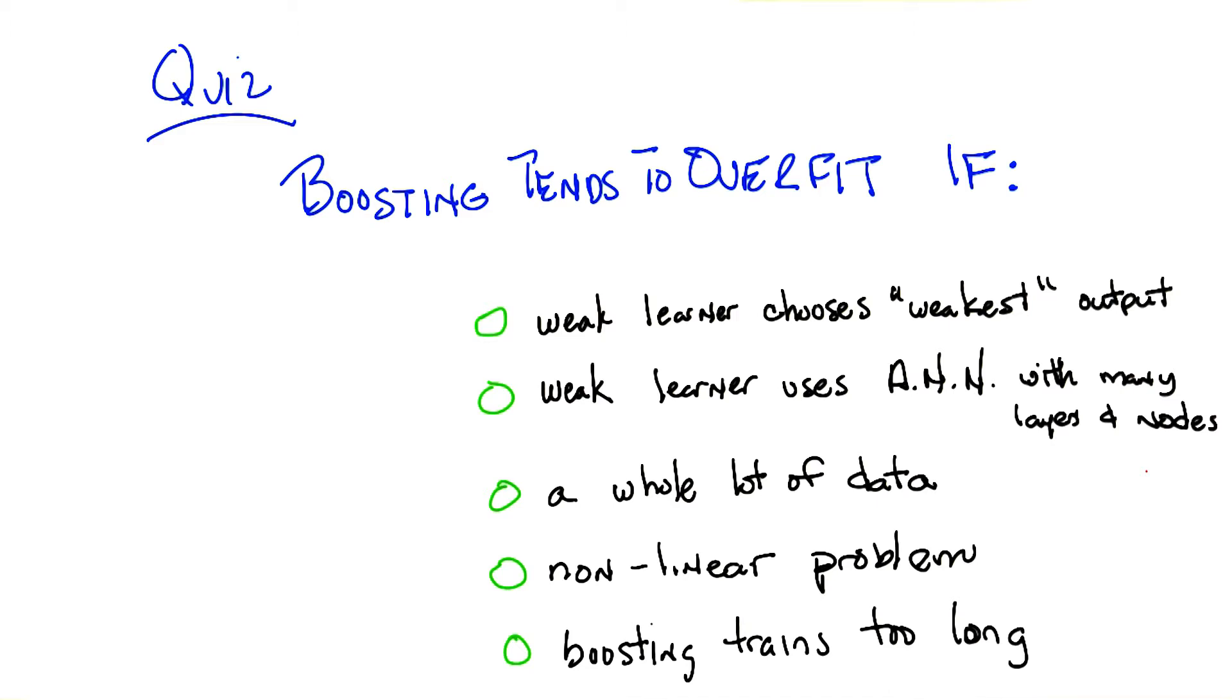If we're doing boosting over that, we fit a neural net, and then we fit another neural net, and we fit another neural net, and we're combining all the outputs together in the correct weighted way. It's not obvious to me that that should be a good thing to do. I'm not sure it would overfit, but it seems like it sure could.